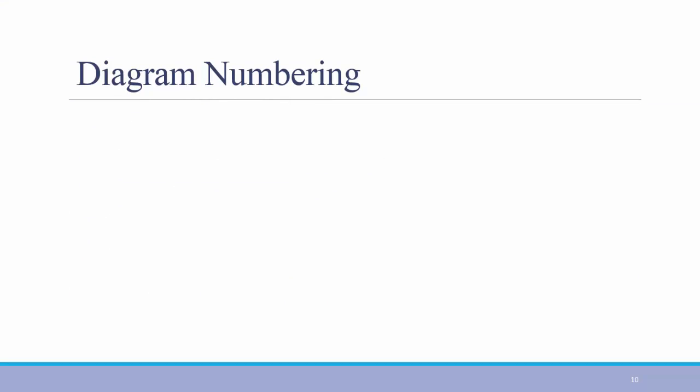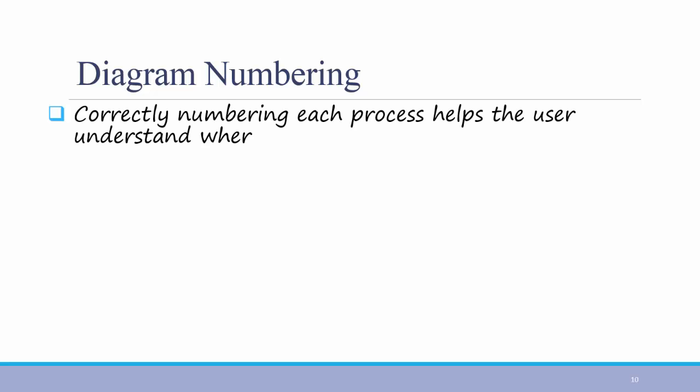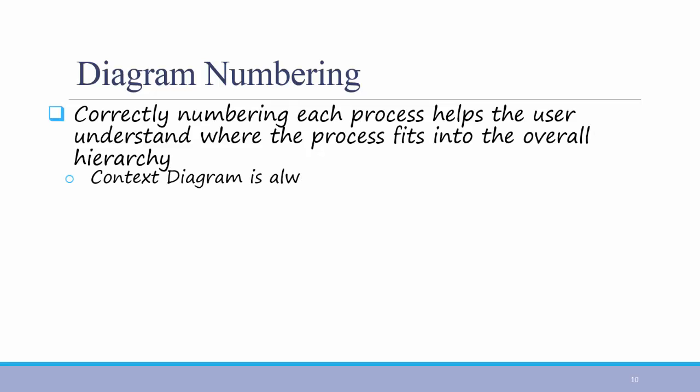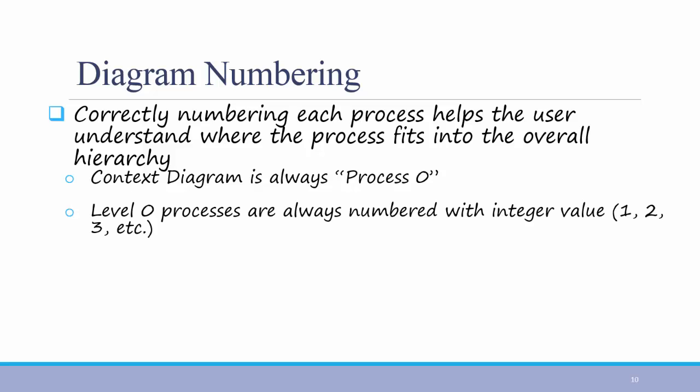Because we have a large set of data flow diagrams instead of trying to fit everything into one, it's important that you correctly number each one to help the user understand where the process fits into the overall hierarchy. The context diagram is always process 0. On the level 0 diagram, your processes are always numbered with integer values.